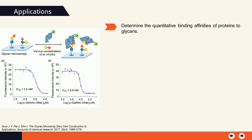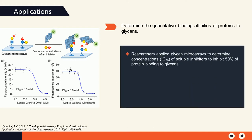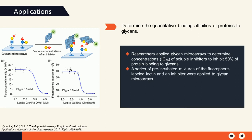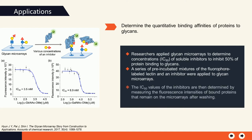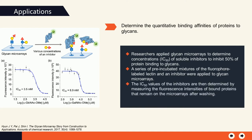Another application is to determine the quantitative binding affinities of proteins to glycans. Researchers apply glycan microarrays to determine concentrations of soluble inhibitors needed to inhibit 50% of protein binding to glycans. In this assay, a series of pre-incubated mixtures of fluorophore-labeled lectin in an inhibitor were applied to glycan microarrays. The values of the inhibitors were determined by measuring the fluorescence intensities of bound proteins that remain on the microarrays after washing.